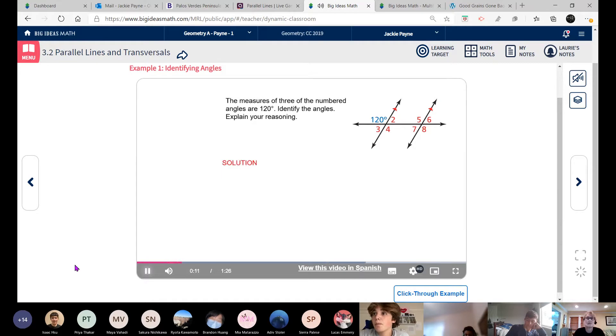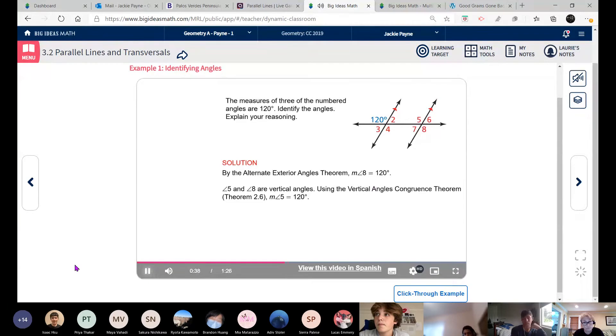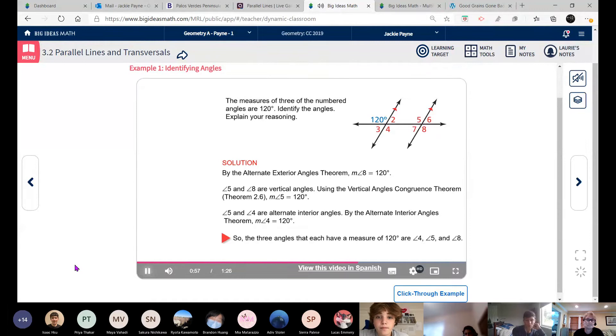The measures of three of the numbered angles are 120 degrees. Identify the angles. Explain your reasoning. Solution. Notice that the diagram shows two parallel lines cut by a transversal. So you can use the theorems about parallel lines. The 120 degree angle and angle 8 are alternate exterior angles. So by the alternate exterior angles theorem, the measure of angle 8 equals 120 degrees. Next, angle 5 and angle 8 are vertical angles. So using the vertical angles congruence theorem, the measure of angle 5 equals 120 degrees. Finally, angle 5 and angle 4 are alternate interior angles. So by the alternate interior angles theorem, the measure of angle 4 equals 120 degrees. So the three angles that each have a measure of 120 degrees are angle 4, angle 5, and angle 8.